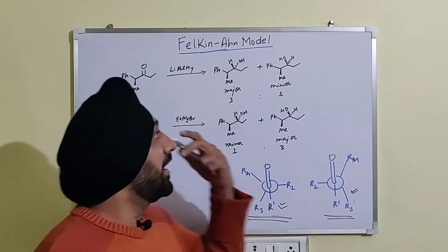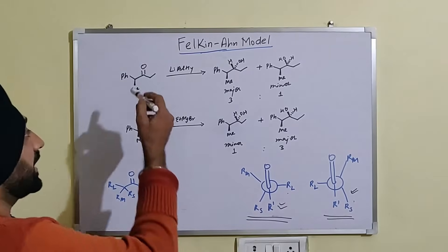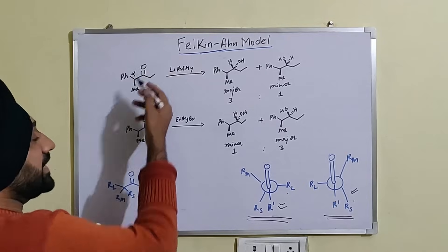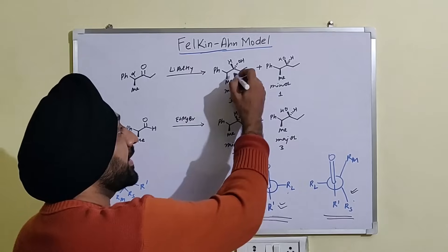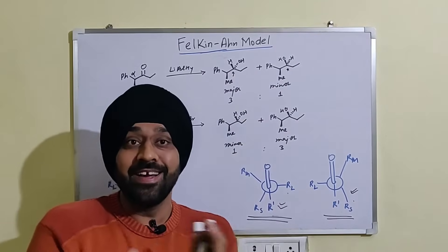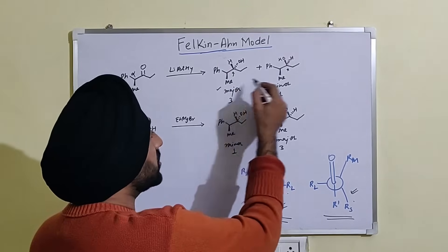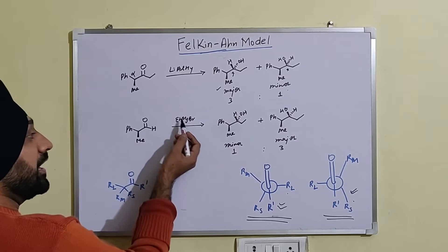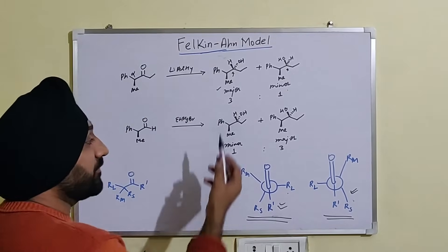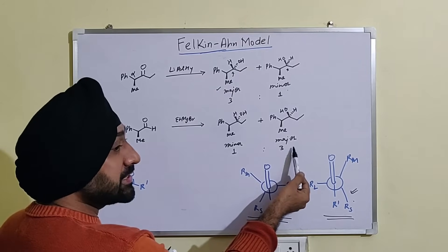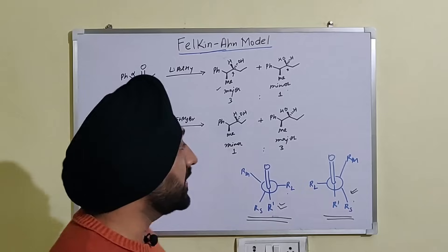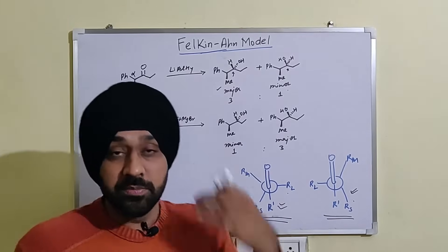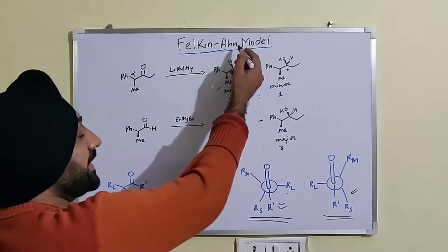First, let us understand why we need the Felkin-Anh model. What was observed when carbonyl compounds having a chiral centre at the alpha position — or in some cases without a chiral centre — undergo a reaction, there was an asymmetric induction on this centre. As a result we get diastereoselectivity, meaning we get one diastereomer as the major product compared to the other. For example, ethyl Grignard attacked on an aldehyde and we see completely reversed diastereoselectivity in different cases. So there had to be a model to explain this asymmetric induction — that is when the Felkin-Anh model was proposed.